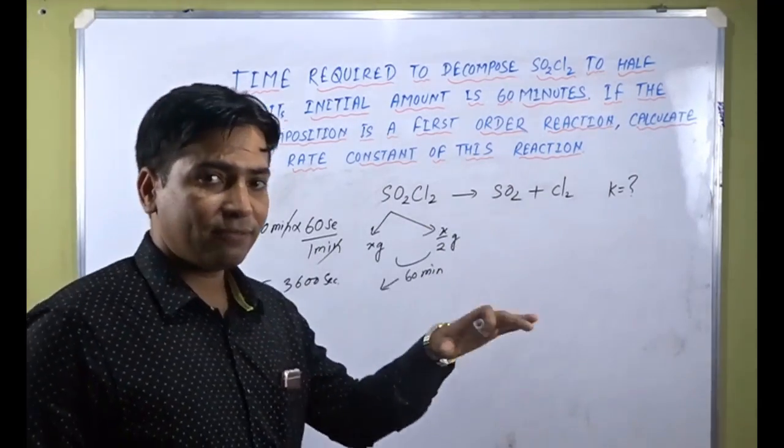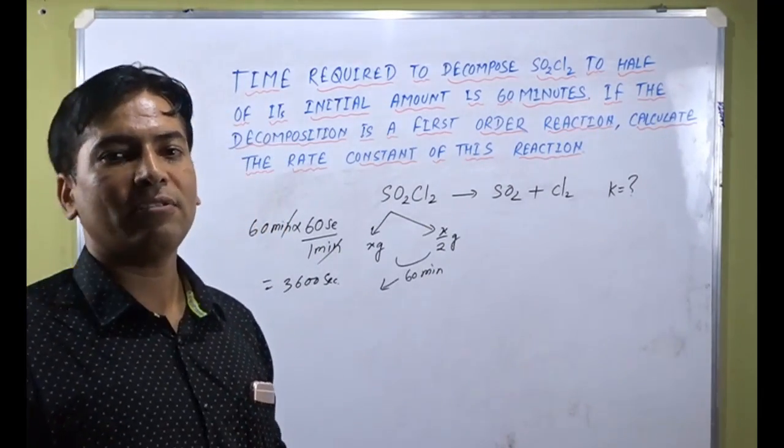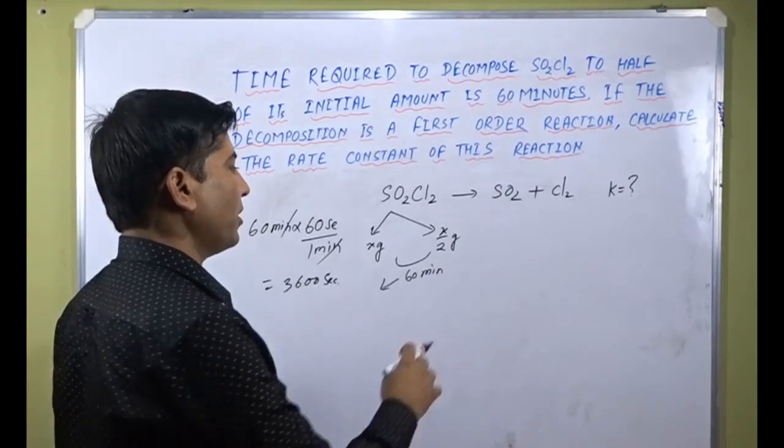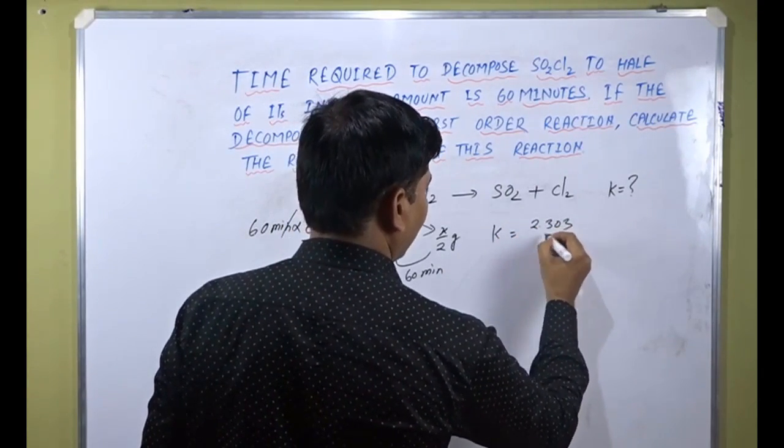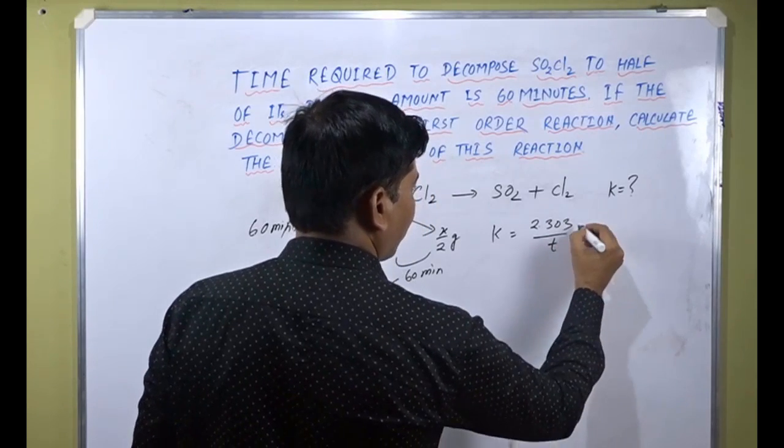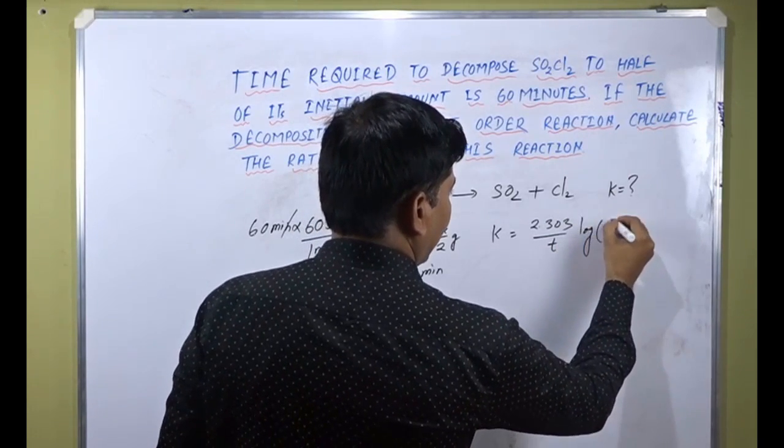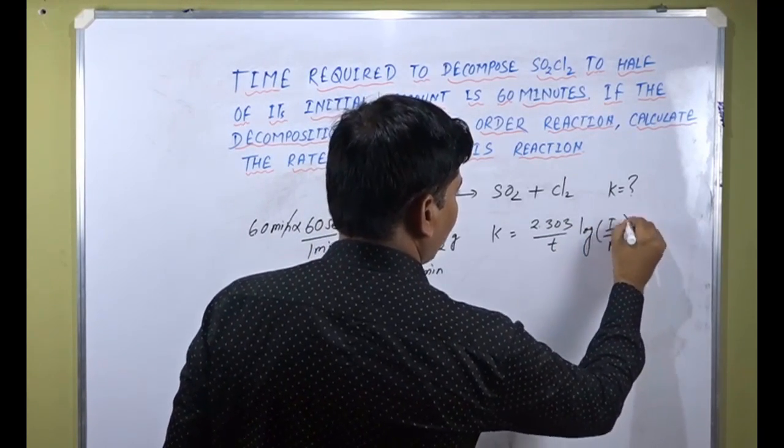Since this reaction is first order, we apply the formula for the first order reaction. The formula is K equals 2.303 over t times log of initial amount divided by final amount.